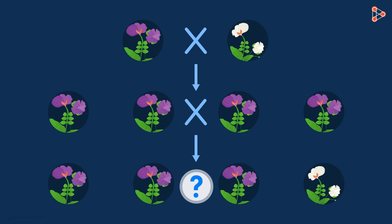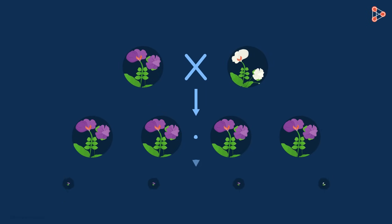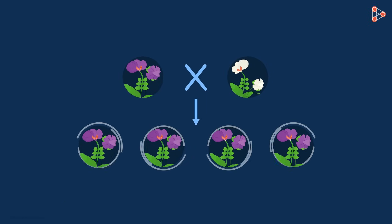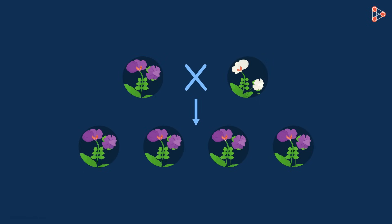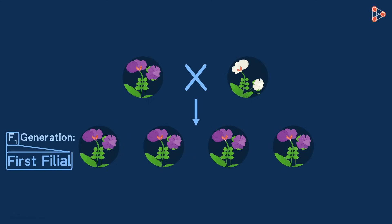How could this be possible, and what could be the probable reasons for this? The first set of results were that all the plants in the first, or F1 generation, were with purple-coloured flowers. Here, the term F1 indicates the first filial generation.